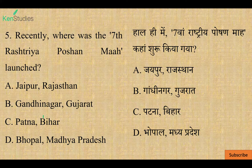Next question: Recently, where was the 7th Rashtriya Poshan Maah launched? Options are: Jaipur Rajasthan, Gandhinagar Gujarat, Patna Bihar, or Bhopal Madhya Pradesh. The correct option is B — Gandhinagar Gujarat.